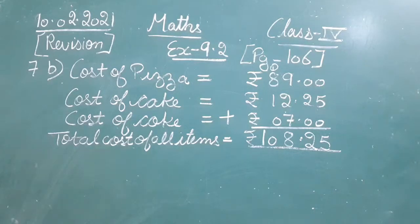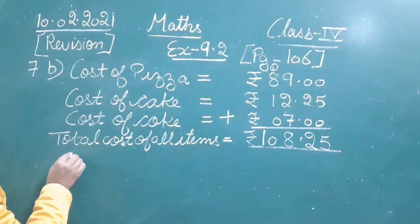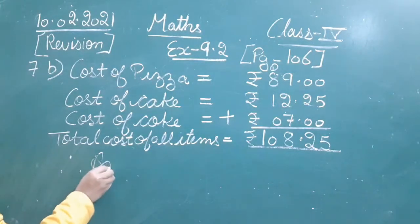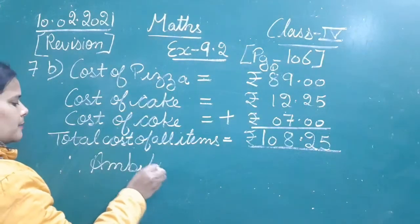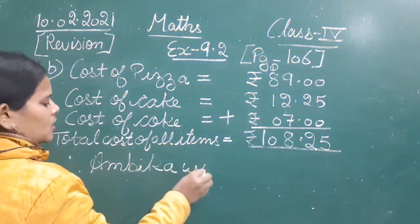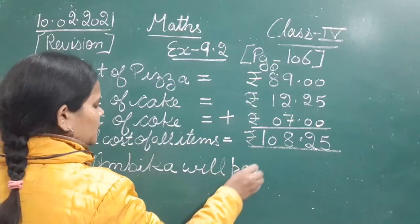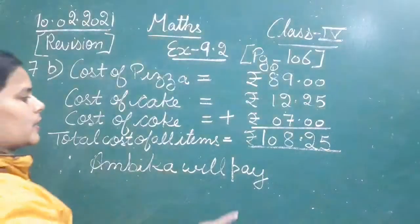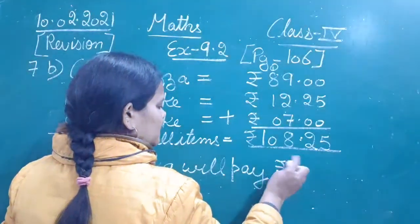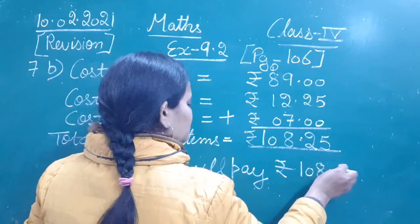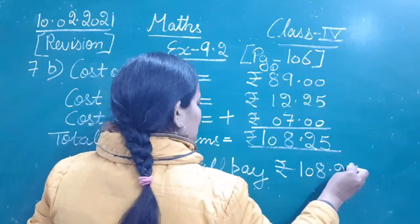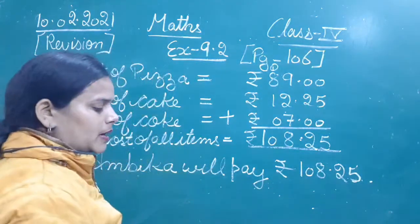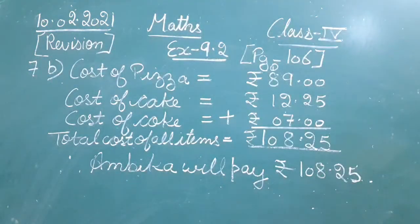So this is the cost of all the items bought by Ambika. We will write the solution sentence: therefore, Ambika will pay rupees 108 and 25 paise. Just note it down in your notebook very neatly. This is the solution of part B of question number 7.